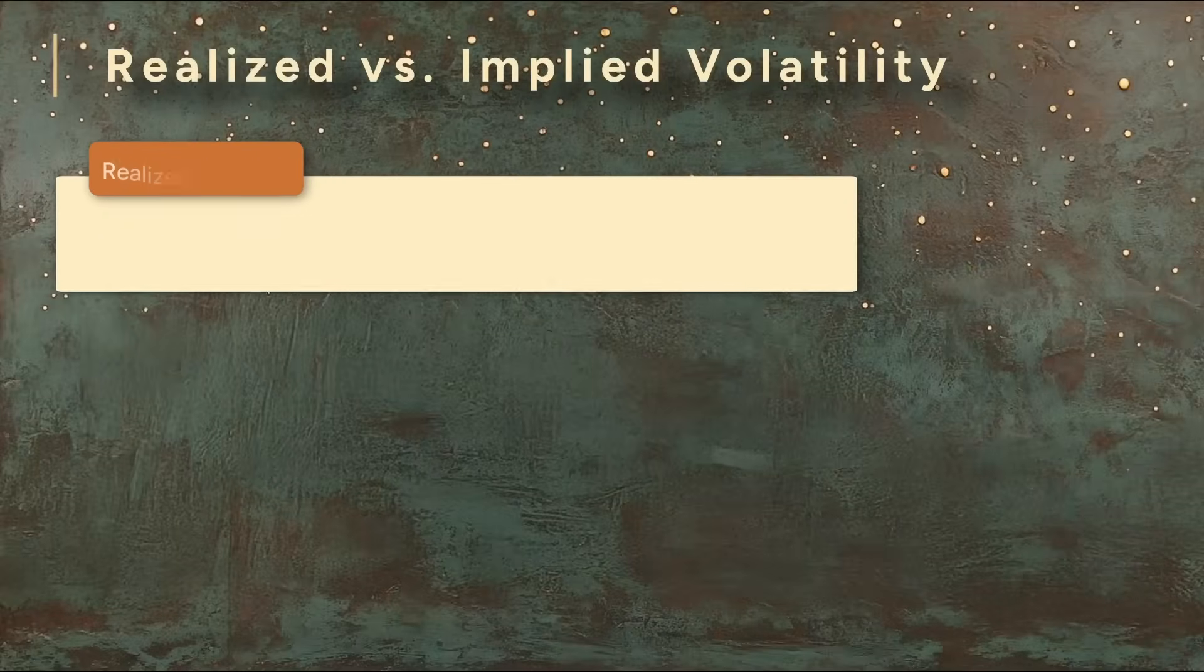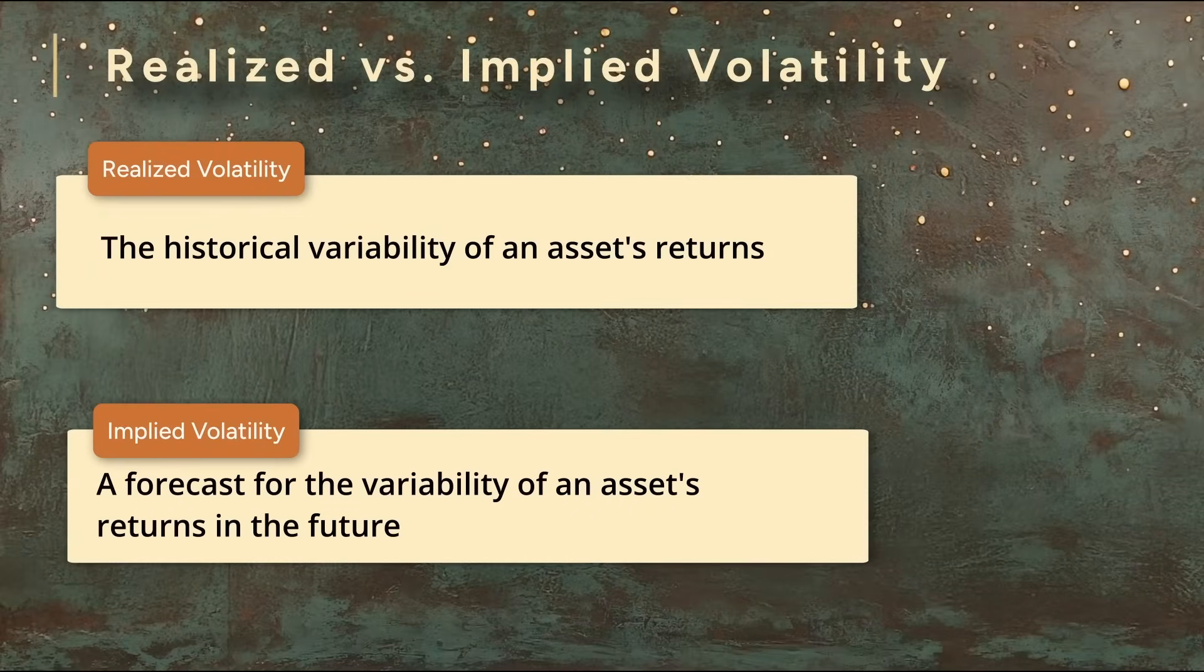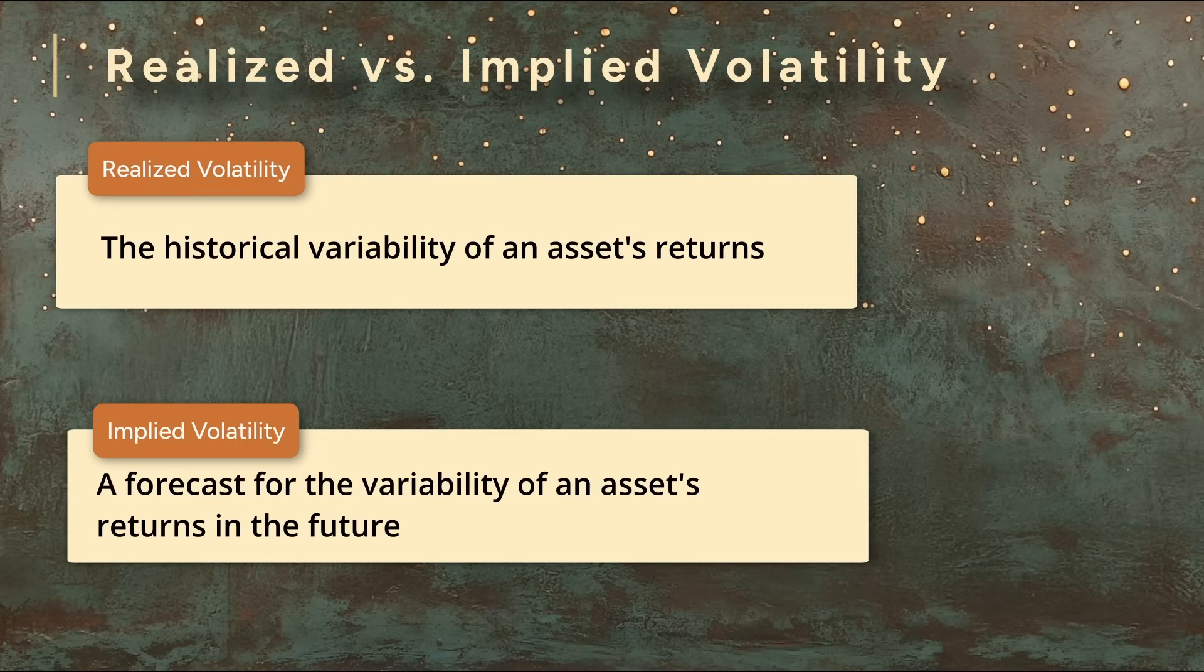Realized volatility is yesterday's weather. Implied volatility is the market's forecast. Implied volatility is unobservable, but it's what we really need to know.